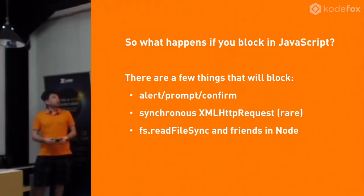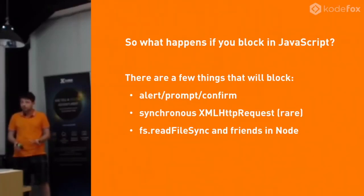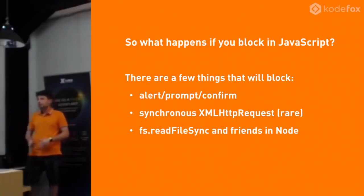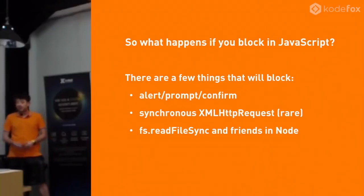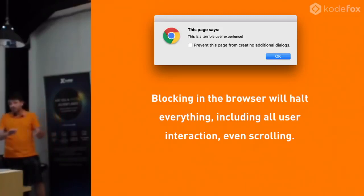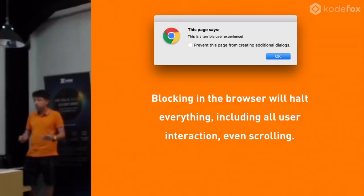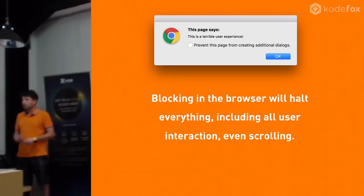So what happens if you block in JavaScript? There are some things that will block the thread and halt any other execution. Alert or prompt is the most common. We also have a synchronous style of XMLHttpRequest, which was probably a mistake in the API. And there's some stuff in Node world that is intentionally synchronous. The one everybody's probably familiar with is the alert style — the page puts a dialogue up and everything pauses. You cannot interact or press a button, you can't even scroll. That's what we mean when we say a blocking interaction.